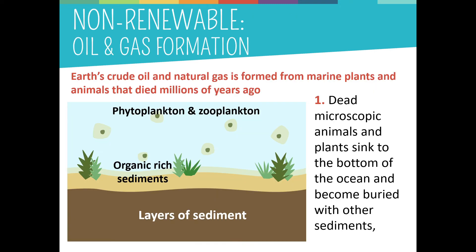All of earth's crude oil and natural gas is formed from marine plants and animals that died billions of years ago. When they died, organisms sank to the bottom of the ocean and were very gradually covered in layers of sediments. By this way, oil and gas formation took place.